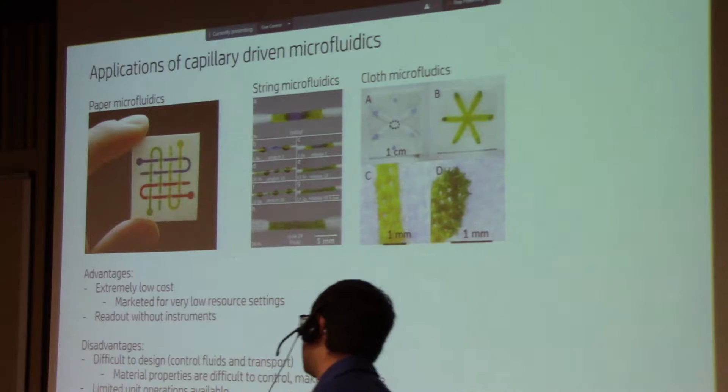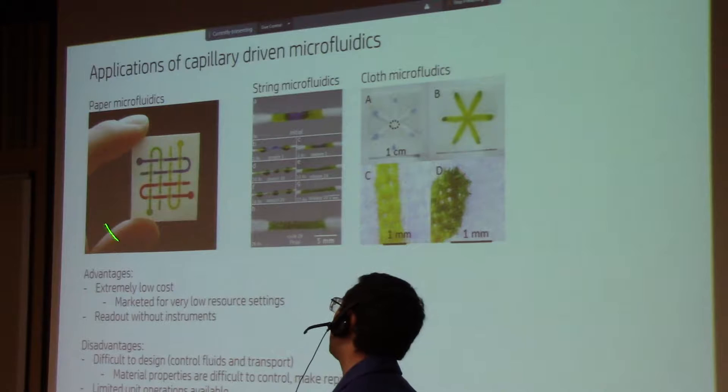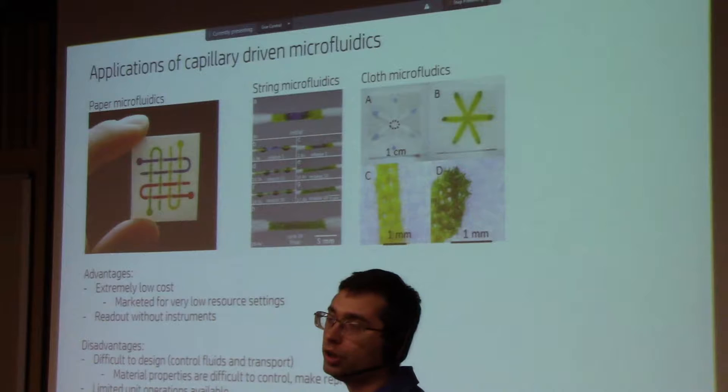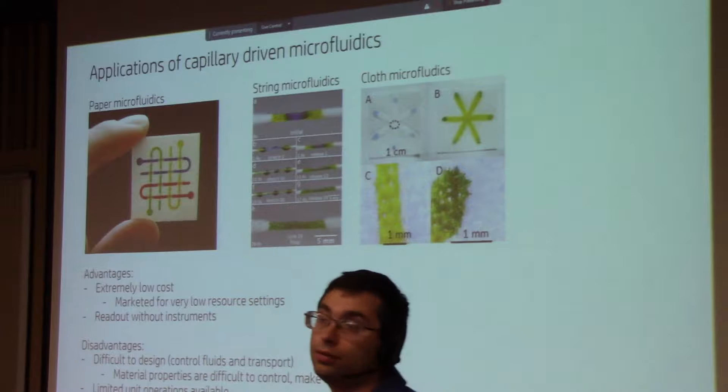And there are lots of examples of this. So what are the advantages? As I said, they are very low cost. Typically, they are targeted readout without any instruments. Sometimes they use a cell phone to make it a little bit more quantitative. Because the idea is in low resource settings, still folks have, a lot of folks have cell phones. So they make that a little bit more quantitative.